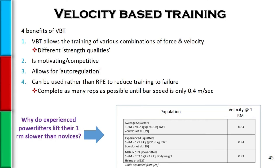There are benefits of velocity-based training that many people overlook. One advantage is the technological feedback, which can be motivating. But more importantly, it allows us to be very specific when targeting a point on the force-velocity curve — training speed-strength or strength-speed precisely. Without knowing actual velocity, we're simply assuming percentage correlations, such as 40% 1RM allowing movement at a certain speed. With VBT and proper technology, we can actually hone in on the exact training effect.